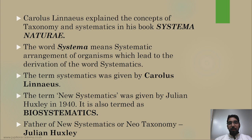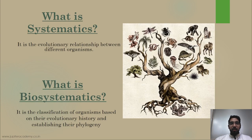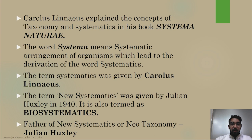The term systematics was coined by Carolus Linnaeus. Later, Julian Huxley in 1940 gave a new term — New Systematics, also called biosystematics — which is the classification of organisms based on evolutionary history. Hence Julian Huxley was regarded as the father of New Systematics or Neo-taxonomy. In exams they may ask who is the father of biosystematics, neo-systematics, or neo-taxonomy — the answer is Julian Huxley.